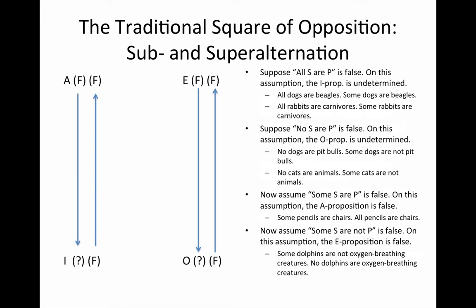You'll see in each of the immediate inferences here — 'some dogs are not pit bulls' is true, 'some cats are not animals' is false. Cast your eye back to the chart. Look at the I proposition under the assumption that it's false, and notice that the arrow leading upwards yields a false superaltern. The same goes with the O proposition: when the O is false, the E is false.